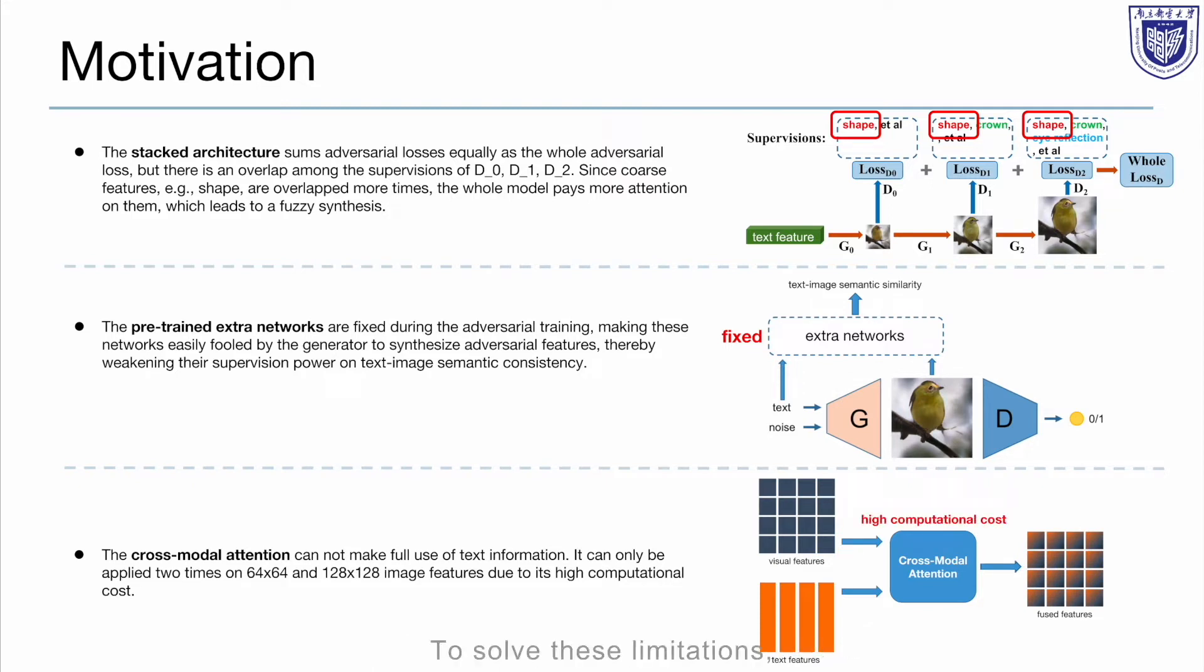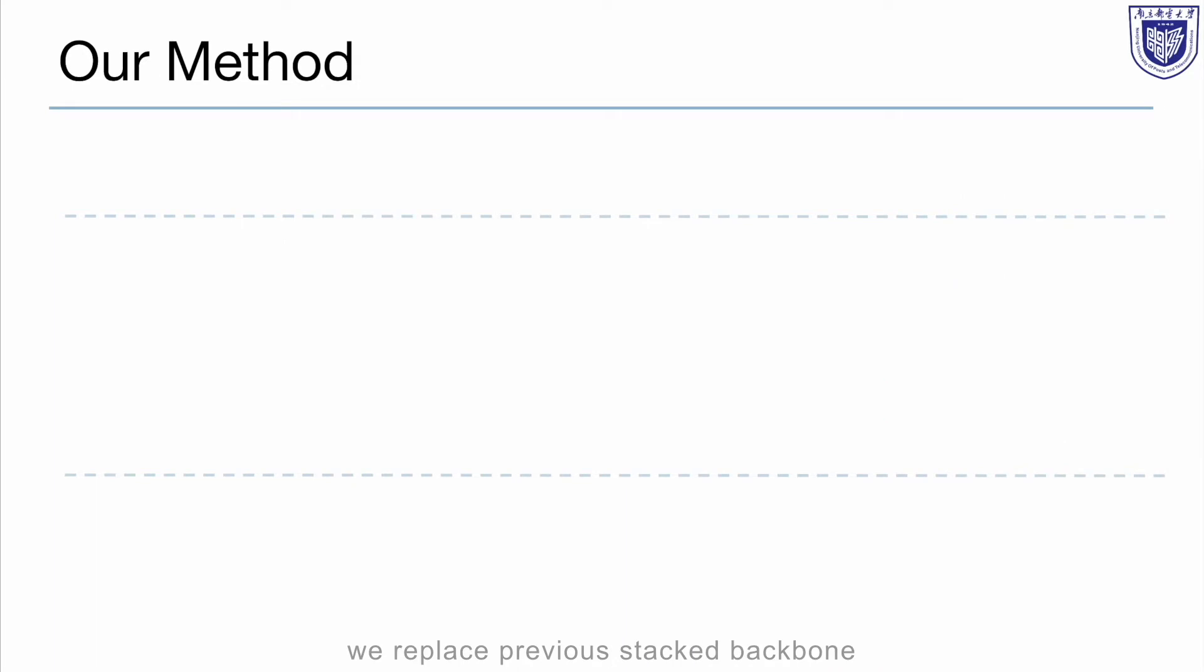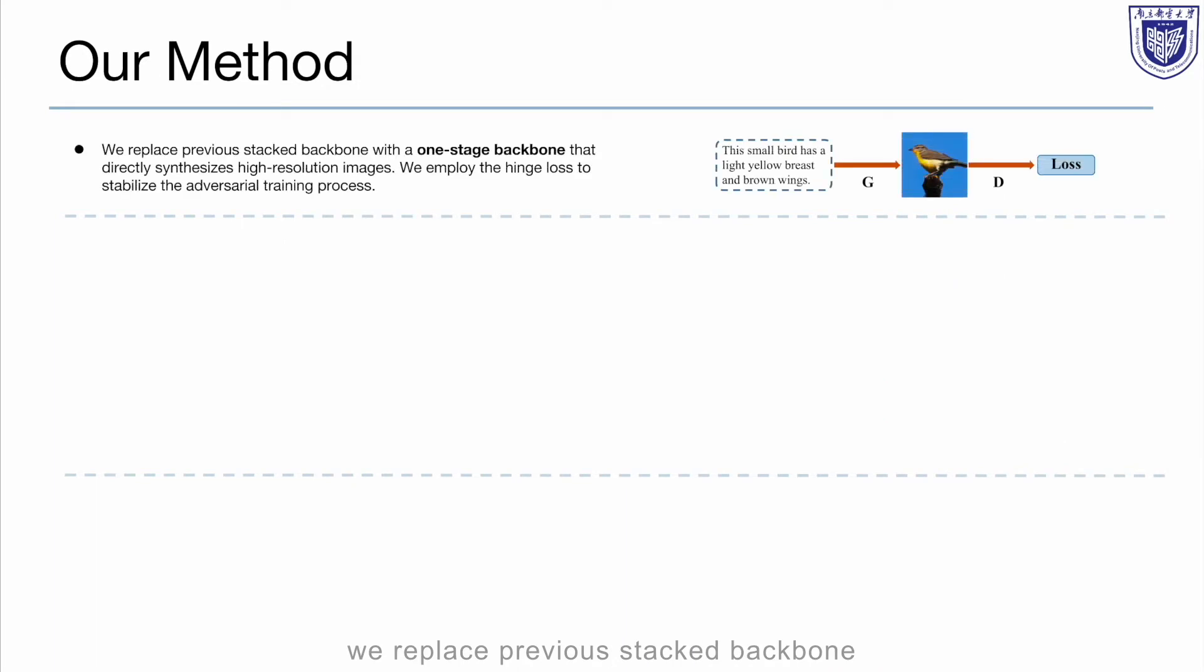To solve these limitations, we propose a one-stage text-to-image backbone, a target-aware discriminator, and a deep text-image fusion block accordingly. To be specific, we replace previous stacked backbone with a one-stage backbone that directly synthesizes high-resolution images.